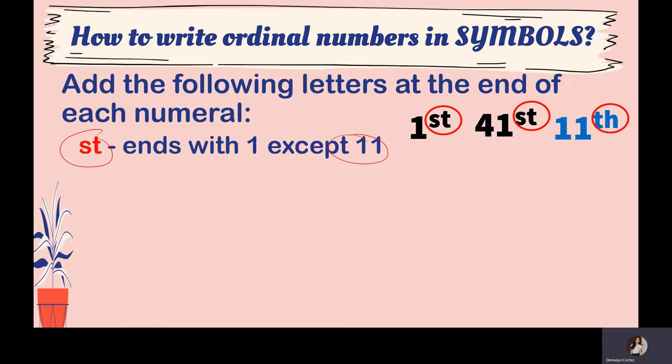For 11, we add TH instead of ST, because it would sound wrong to say '11ST.' So 11th is the correct ordinal symbol for 11. That is the exception for numbers ending with 1.